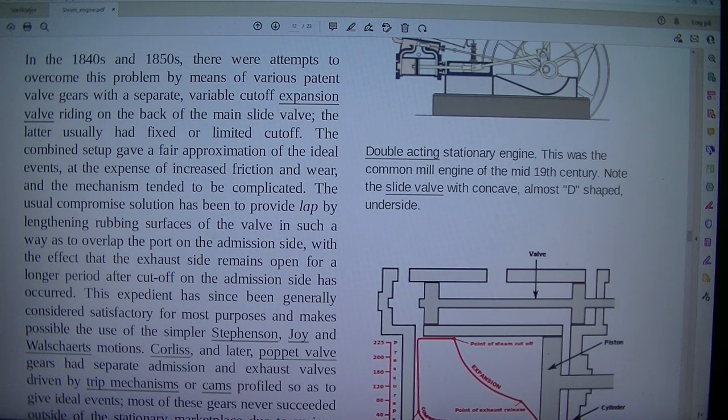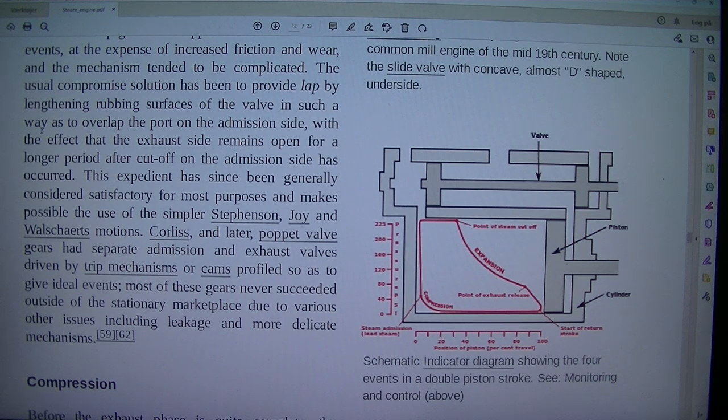In the 1840s and 1850s, there were attempts to overcome this problem by means of various patent valve gears with a separate variable cutoff expansion valve riding on the back of the main slide valve. The latter usually had fixed or limited cutoff. The combined setup gave a fair approximation of the ideal events, at the expense of increased friction and wear, and the mechanism tended to be complicated. The usual compromise solution has been to provide lap by lengthening rubbing surfaces of the valve in such a way as to overlap the port on the admission side, with the effect that the exhaust side remains open for a longer period after cutoff on the admission side has occurred. This expedient has since been generally considered satisfactory for most purposes and makes possible the use of the simpler Stevenson, Joy and Walschaerts motions.